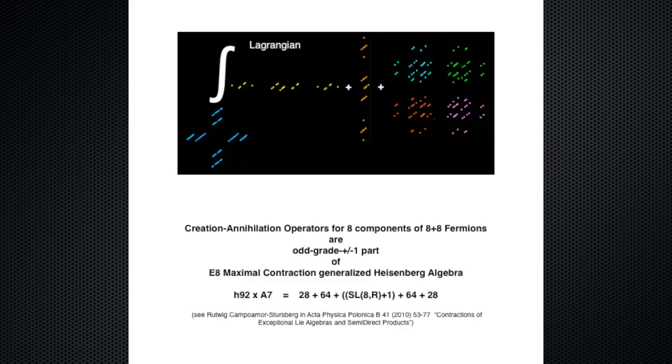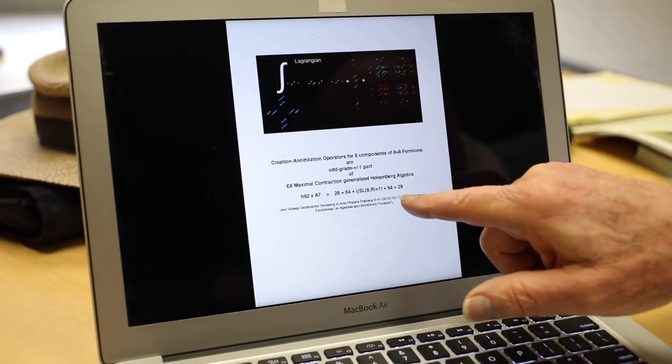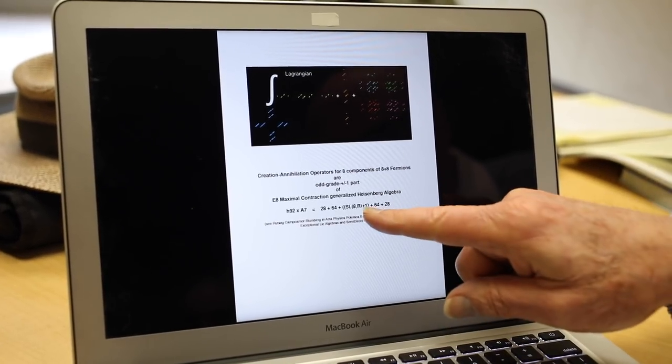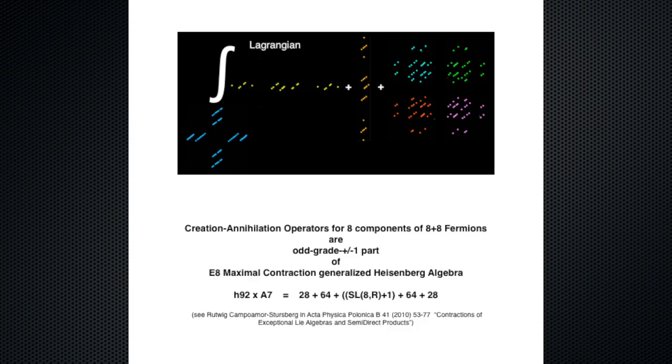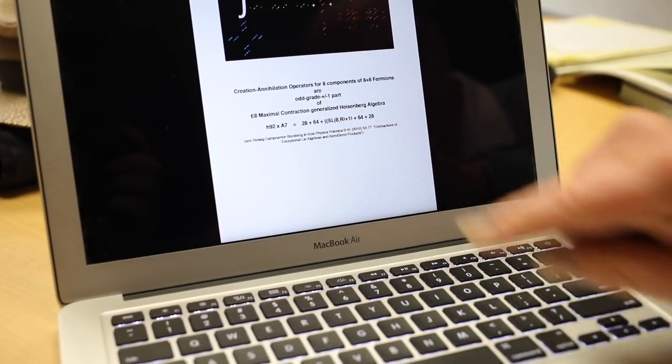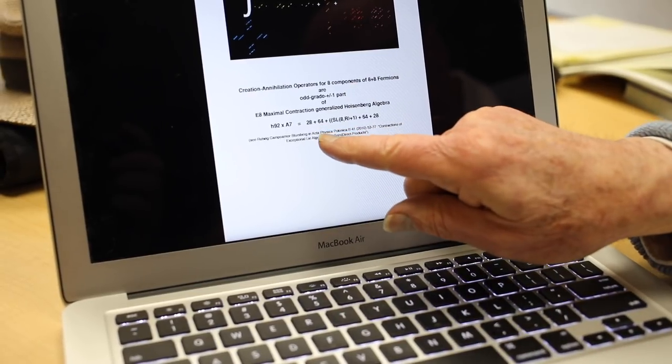If you go back to the Lagrangian and look at it, you can do something else with E8. You can contract it. There's a maximal contraction of E8 which takes all the root vectors down to just a single line. What you wind up with is a generalized Heisenberg algebra. What it has in the middle is an SL(8,R), which is the 64 spacetime thing we were talking about, plus 1. It also has a 28, a 64, a 28. It's graded: this is grade minus 2, grade minus 1, grade 0, grade 1, and grade 2.